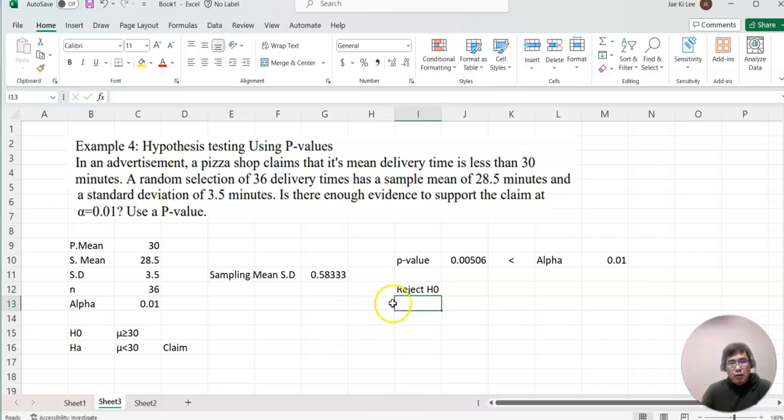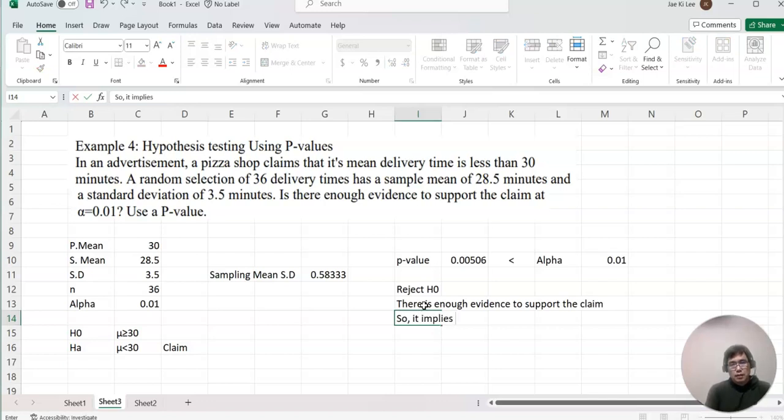We reject H-0 and the claim was in H-a. There is enough evidence to support the claim. It implies that the pizza shop's delivery time is less than 30 minutes. That is correct.